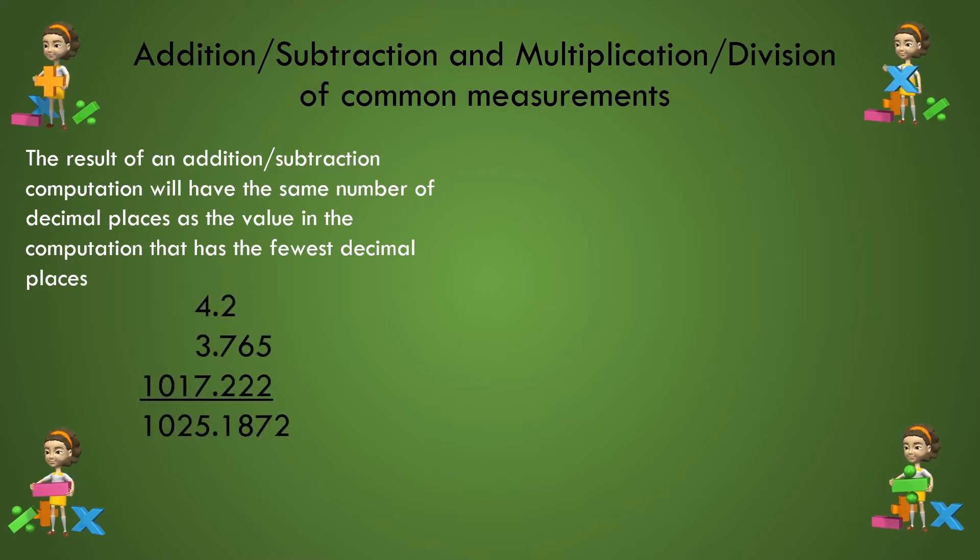For example, let's add three measurements. The measurement with the least number of decimal places is the 4.2 value and the least precise number.